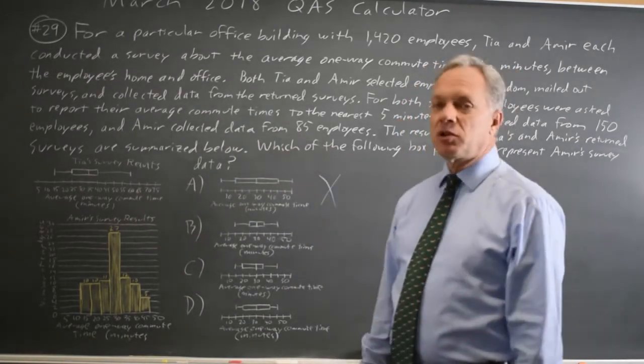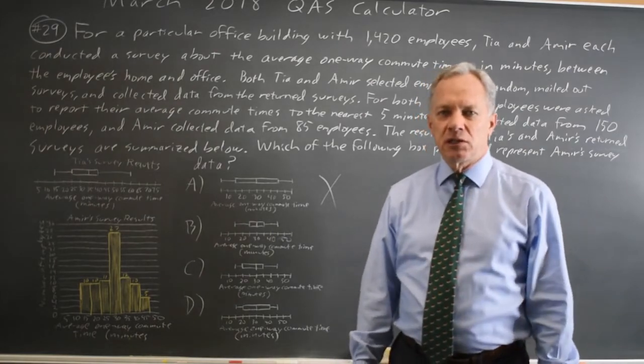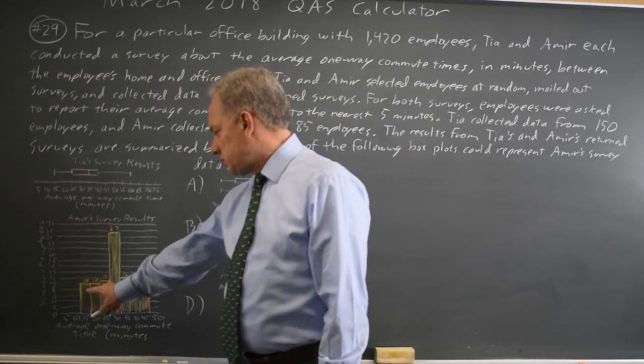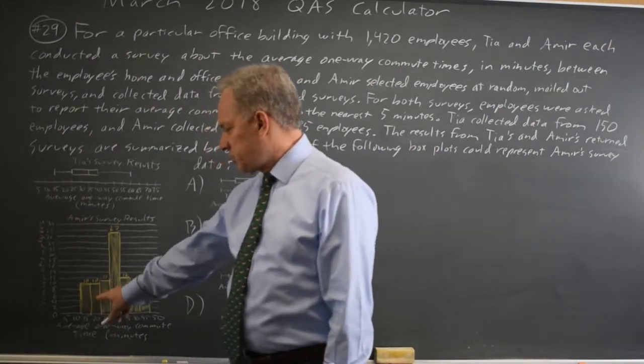So out of 85 employees, 21 should be below that value. So 10 at 15, another 10 at 20.